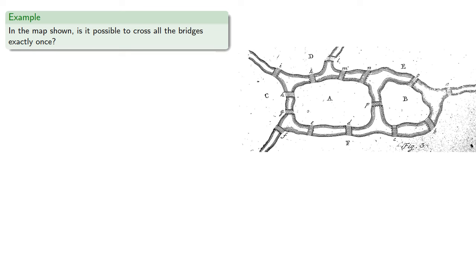For example, let's analyze the map shown. We have our locations, A through F, and we count the number of bridges leading to each location. So A has eight bridges.